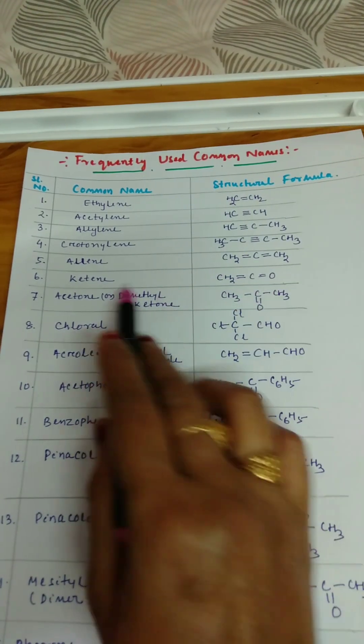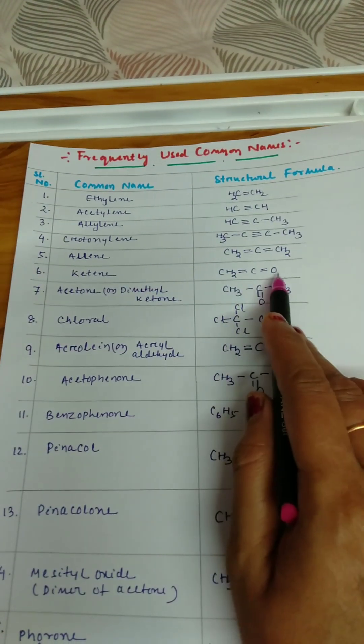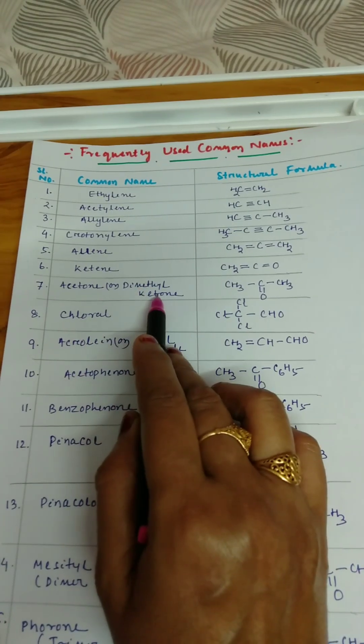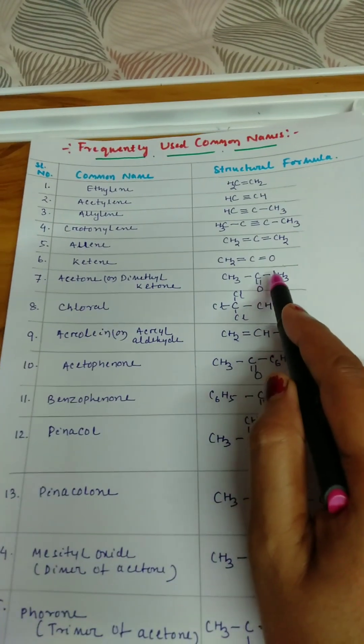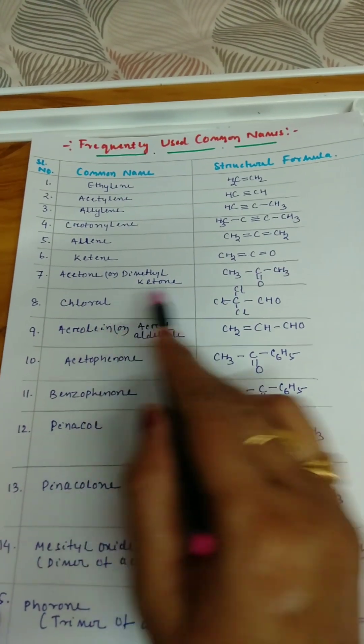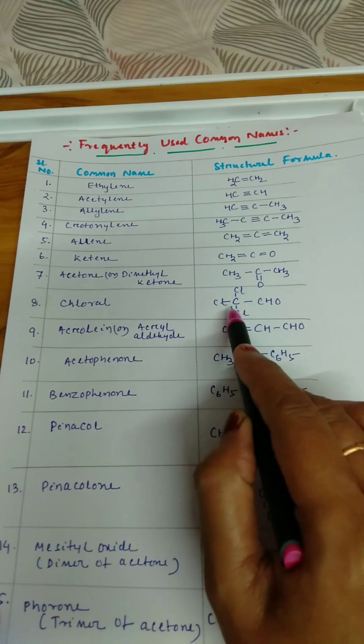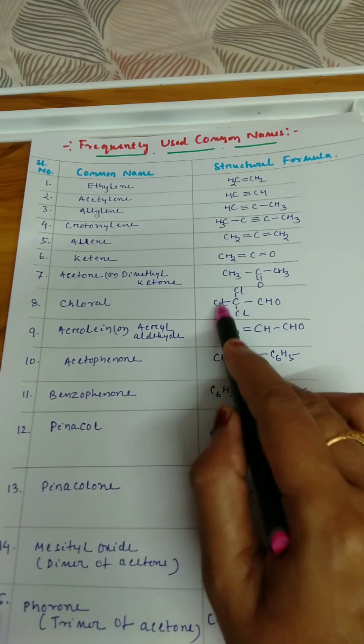Ketene CH2=C=O, acetone or dimethyl ketone, this is your acetone formula CH3-C=O-CH3. Chloral is trichloroacetaldehyde, three hydrogens replaced by three chlorine. Acrylaldehyde CH2=CH-CHO.